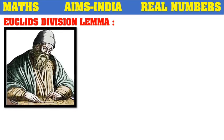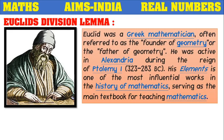Let's see some details about this great mathematician Euclid. He was a Greek mathematician, popularly known as the founder of geometry or father of geometry. He was active in Alexandria during the time of Ptolemy around 300 BC. His book Elements is one of the most influential works in the history of mathematics, serving as a main textbook for teaching mathematics.